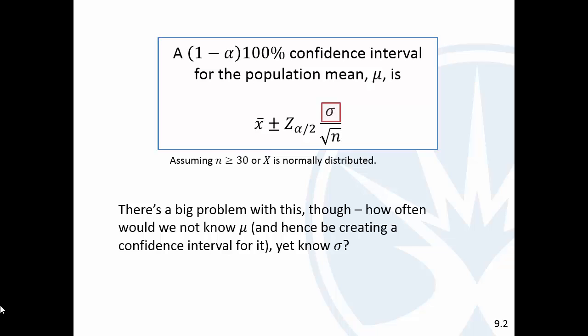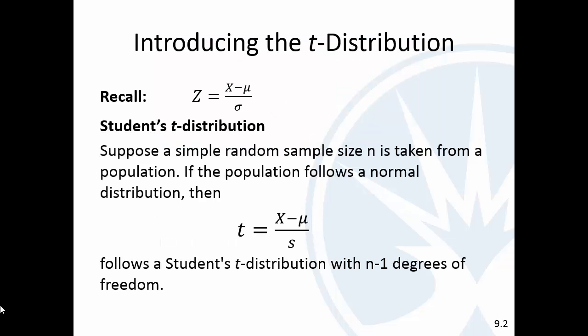So, that sigma in there is an issue. Now, the obvious replacer for that is to put s, but then things kind of change a little bit there, and the distribution gets a little bit different. So, we're going to introduce a new distribution very similar to a z, which was x minus mu over sigma. We're going to call this a t, x minus mu over s.